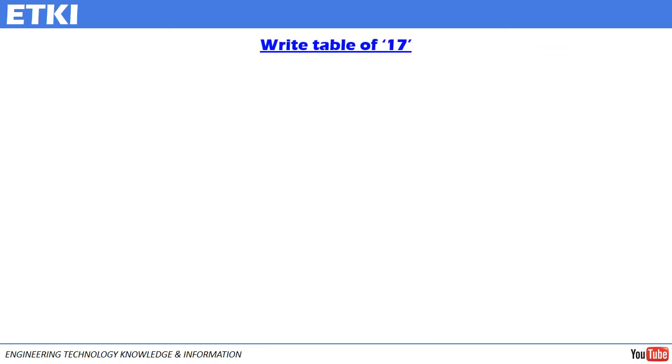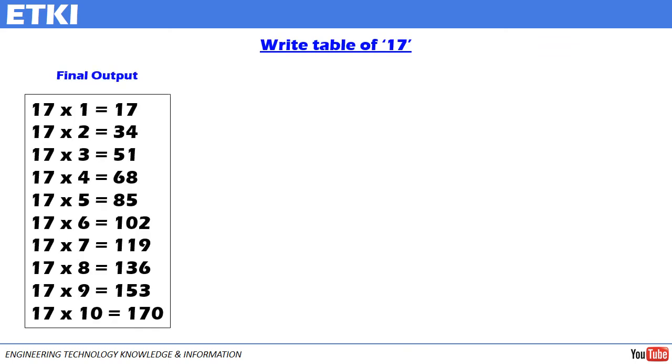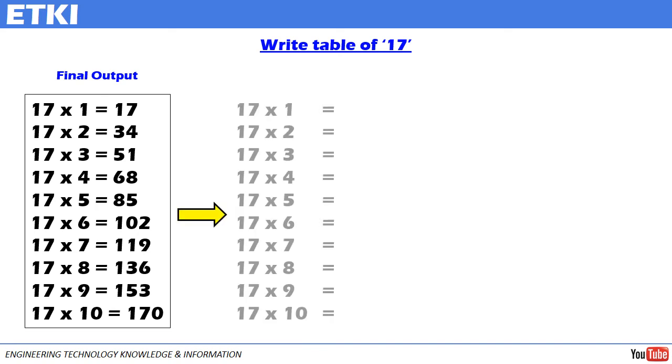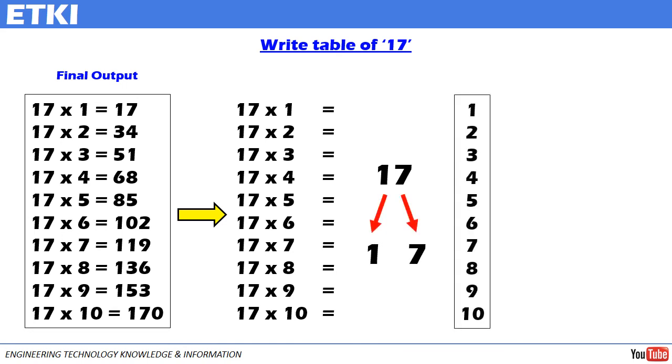Let's write table 17 in order to ensure the method is same for all. Final output. Writing the table. Separated 17 as 1, 7. Writing the table of 1. Writing the table of 7. Same method. Wherever there is a single digit coming, write 0 in front of it.